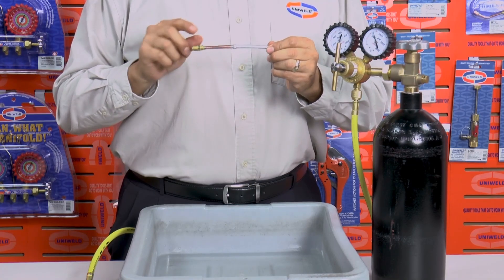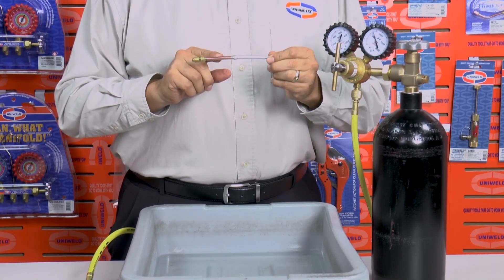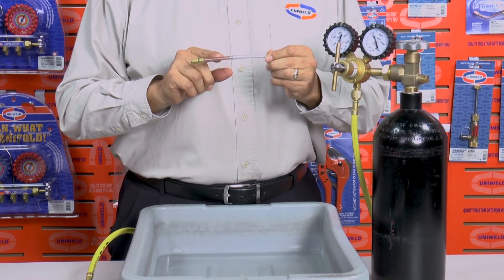We have now soft soldered the copper access valve to the aluminum tube using UniWeld's Uni4300.